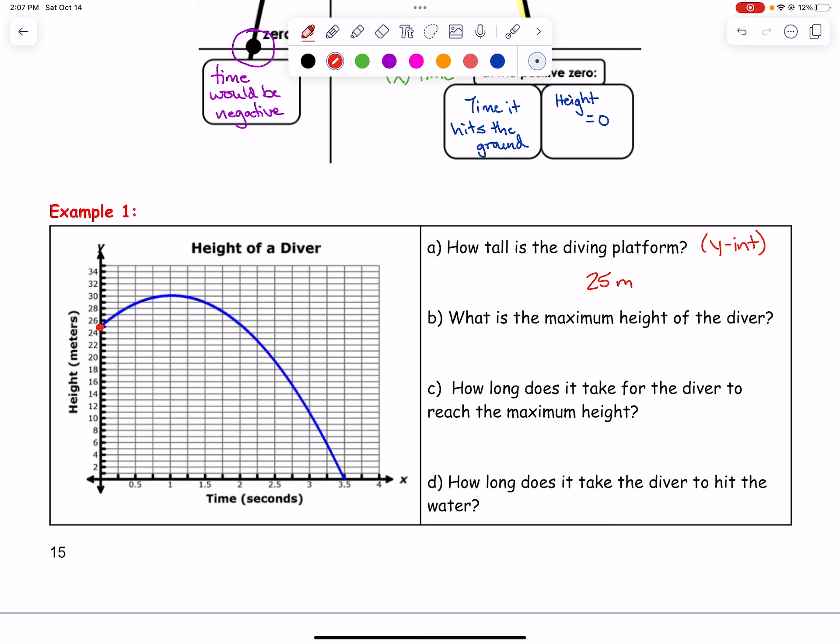What is the maximum height of the diver? It looks like right here is where he or she reached a maximum height. The maximum height would be 30 meters. They must have jumped up before they started to come back down.